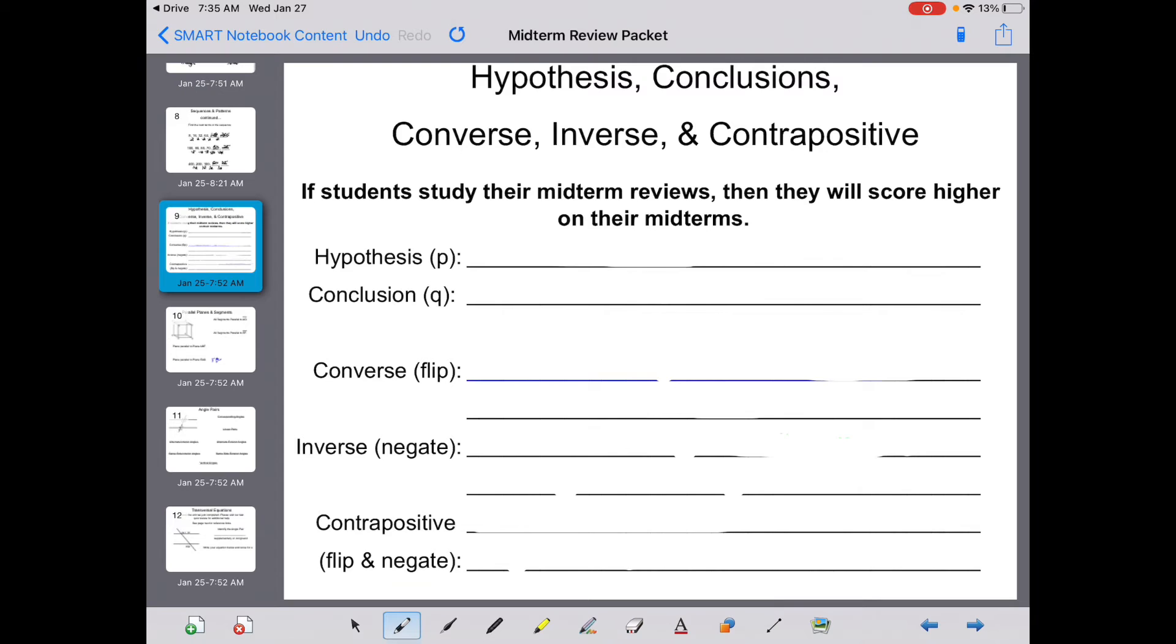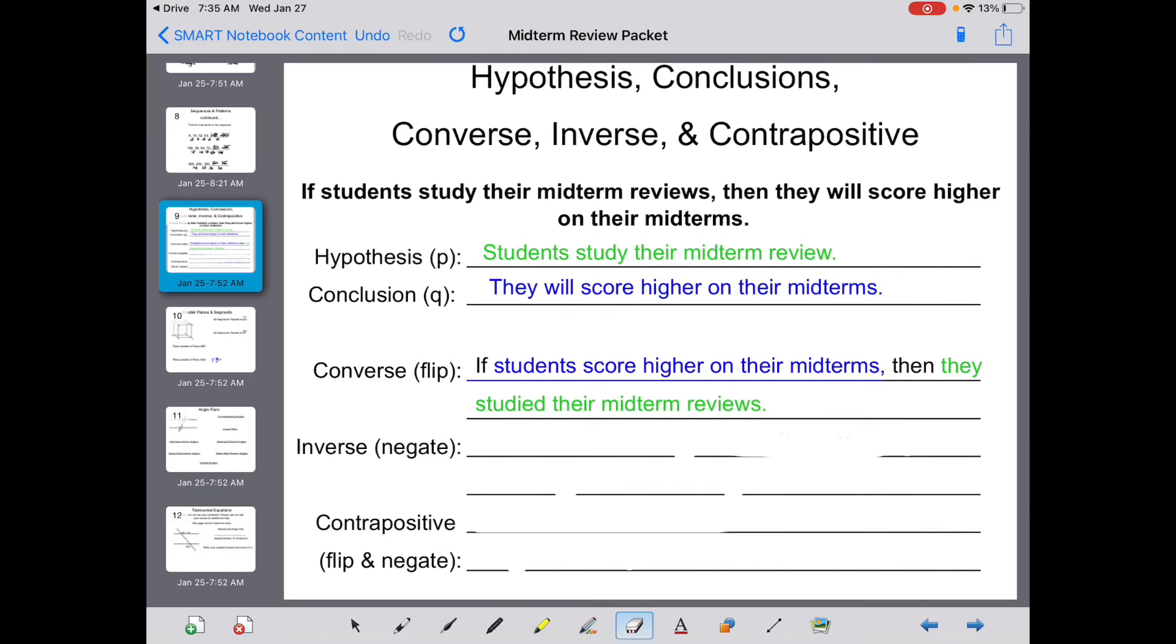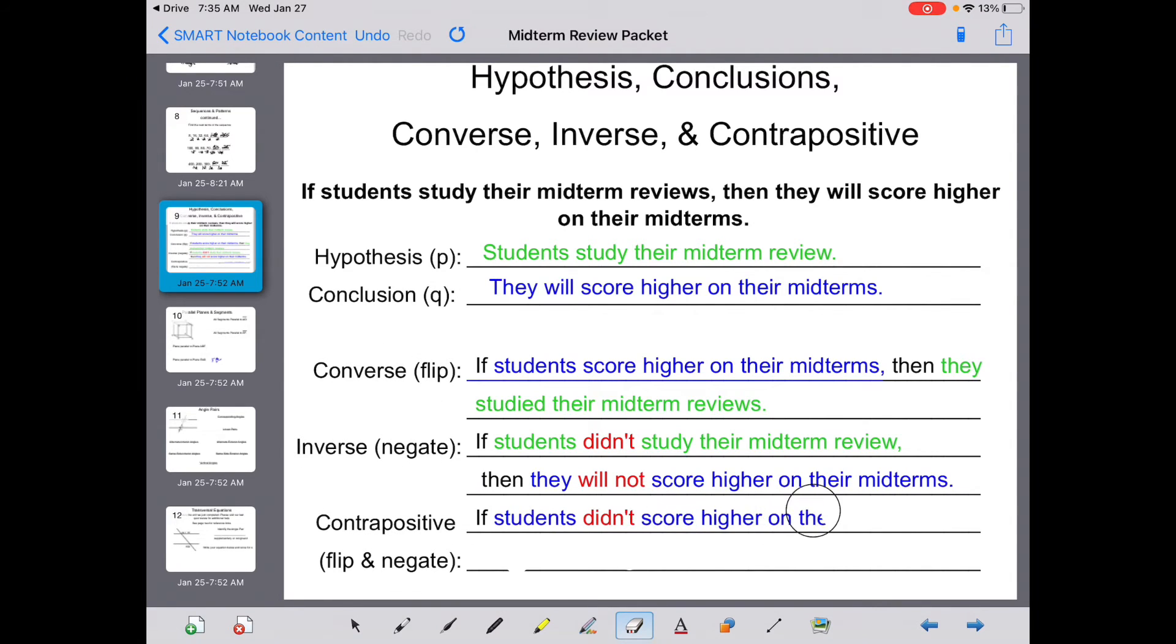If students study their midterm reviews, then they will score higher on the midterm. Well, your hypothesis is the first portion of the phrase right after the word if. So students study their midterm. The conclusion is right after the word then. They will score higher on their midterms. Converse means to flip the entire statement. So if students score higher on their midterms, then they studied their midterm reviews. Contrapositive is to do both converse and inverse at the same time. If students didn't score higher on their midterms, then they didn't study their midterm review.